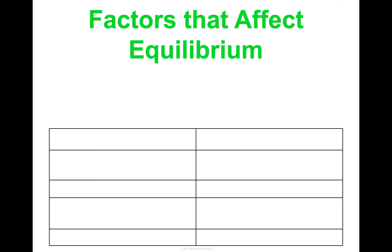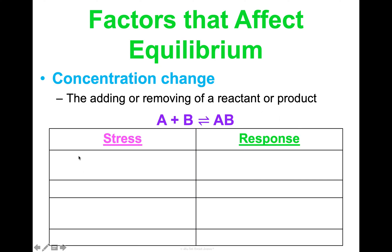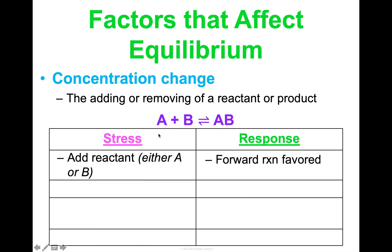Let me give you a summary chart. Starting with concentration change, which is one factor that can affect a reaction in equilibrium — this is just the adding or removing of a reactant or product. Looking at our general synthesis and decomposition reaction in equilibrium: if we add reactant (either A or B), the response to compensate will be a forward reaction favored — it's going to move that direction to make more product to balance out.